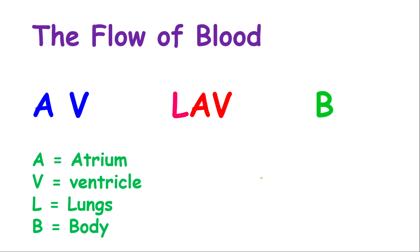Now we're going to make the entire circulatory system easy. I want you to look at this representation and remember the mnemonic: have, love, be. Once you see A, it means atrium; V, ventricle; L, for lungs; and B, for body. This mnemonic is going to help us understand the entire circulatory system.